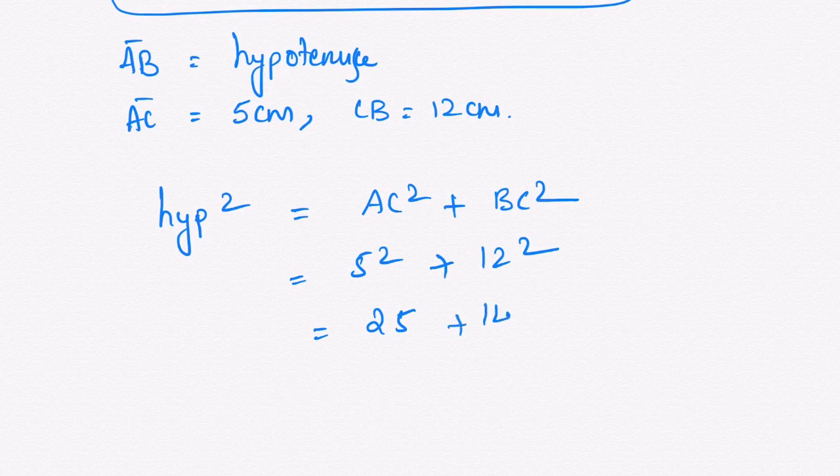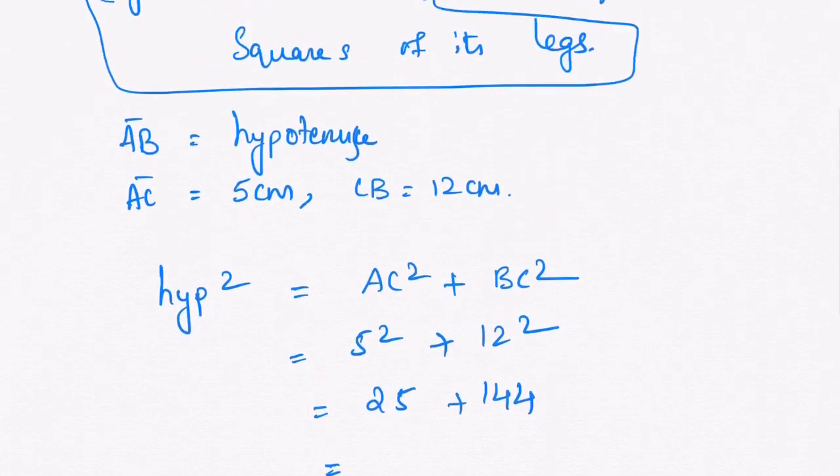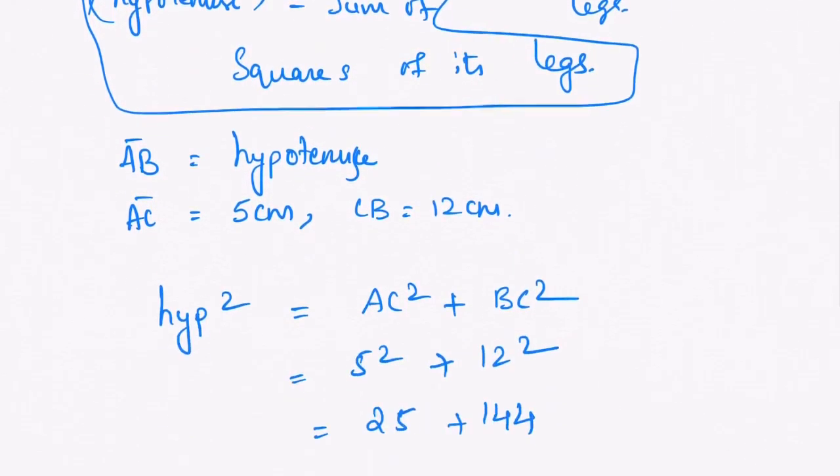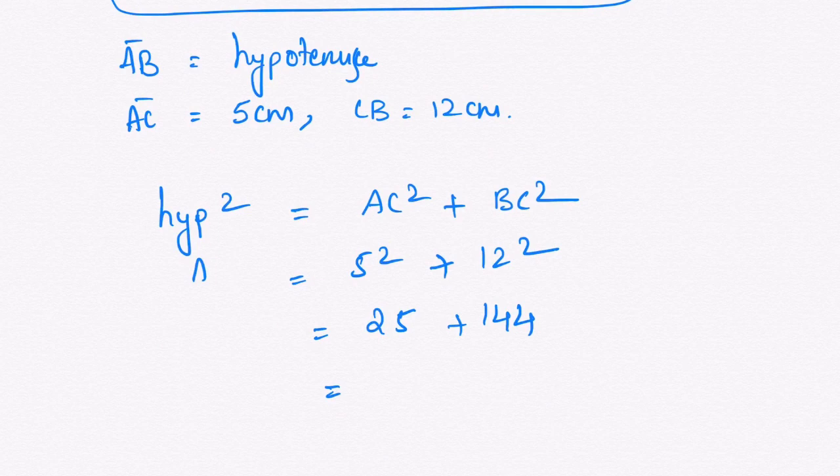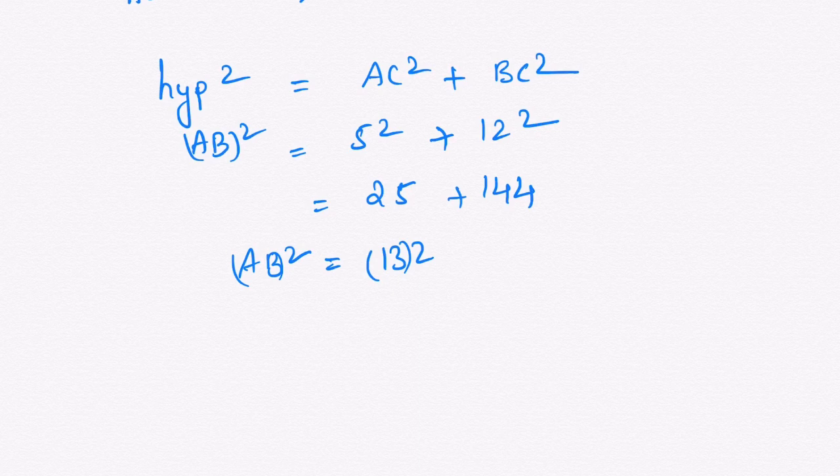So you will get hypotenuse - what is hypotenuse here? Hypotenuse is AB. So you will get AB squared as 13 squared.